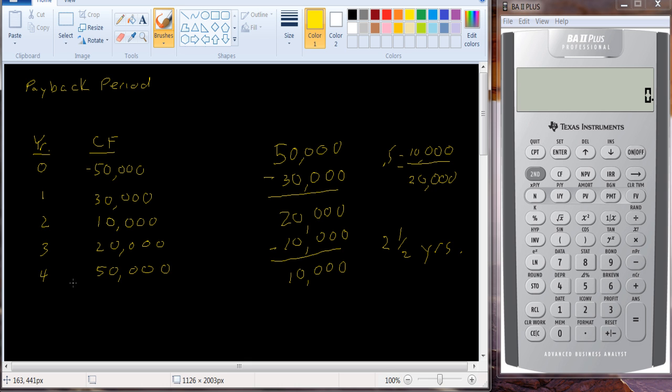It doesn't consider the time value of money. We didn't take present value of anything, and so the $20,000 in year three is not worth $20,000 to us in year zero. The $30,000 in year one is not worth $30,000 to us in year zero. We need to take the present value of that. So that's another problem with this.